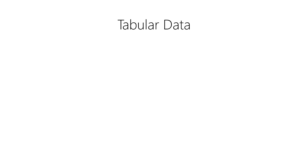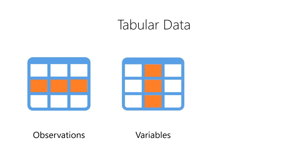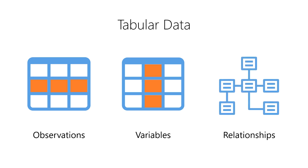In data science, tabular data can be broken down into three main components: observations, which we locate on the rows of a table; variables, which we locate on the columns of a table; and relationships, which connect data from one table to data in another table. We'll discuss each of these components in more detail next.